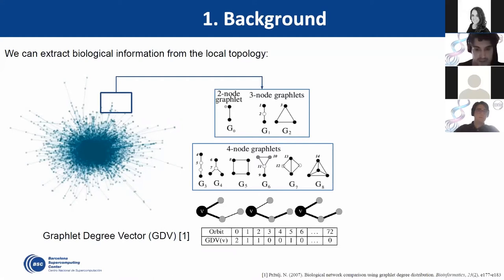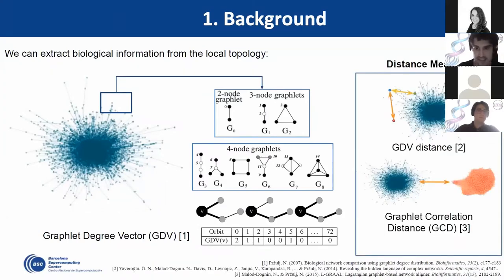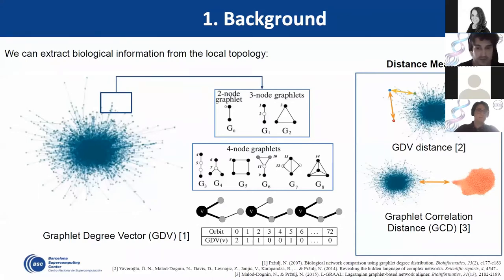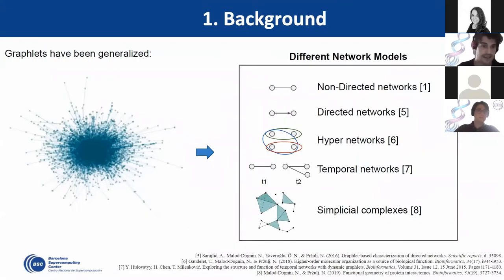With this information, we can perform many different experiments including different kinds of distances, such as the graphlet degree vector distance that measures the distance between nodes in the same network, or the graphlet correlation distance that measures the distance between two different networks. This technology has been generalized to many different types of network models including directed networks, hyper networks, and temporal networks.